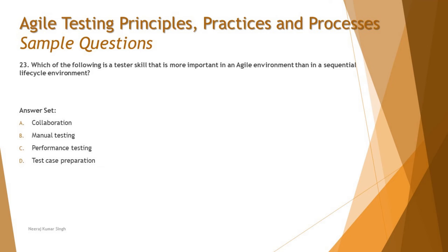Option A is collaboration. In traditional sequential development models, collaboration isn't required on a daily basis — each phase completes before moving to the next. In waterfall or V-model, you collaborate on defects but not day-to-day. You might share defect information with a developer but not necessarily have a direct conversation. However, in agile the basic principle is face-to-face communication.